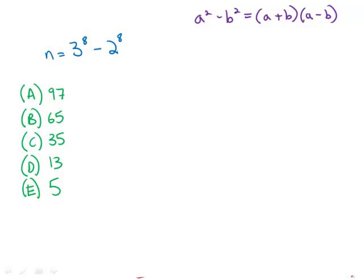If n equals 3 to the 8th minus 2 to the 8th, which of the following is not a factor of n?